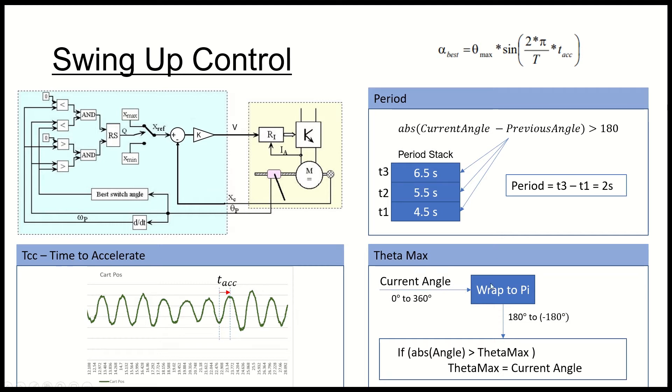The next one is the theta max which isn't anything too special. I didn't apply any resets to this or anything like that because in theory your theta max should only increase and keep increasing if you've done it correctly. I just take the current angle which is between zero and 360 and I wrap it and then I just take the absolute value and if the absolute value is greater than anything it saw previously, it'll just make that the new maximum. So that's how the swing up controller effectively works and we'll now move on to the LQR.